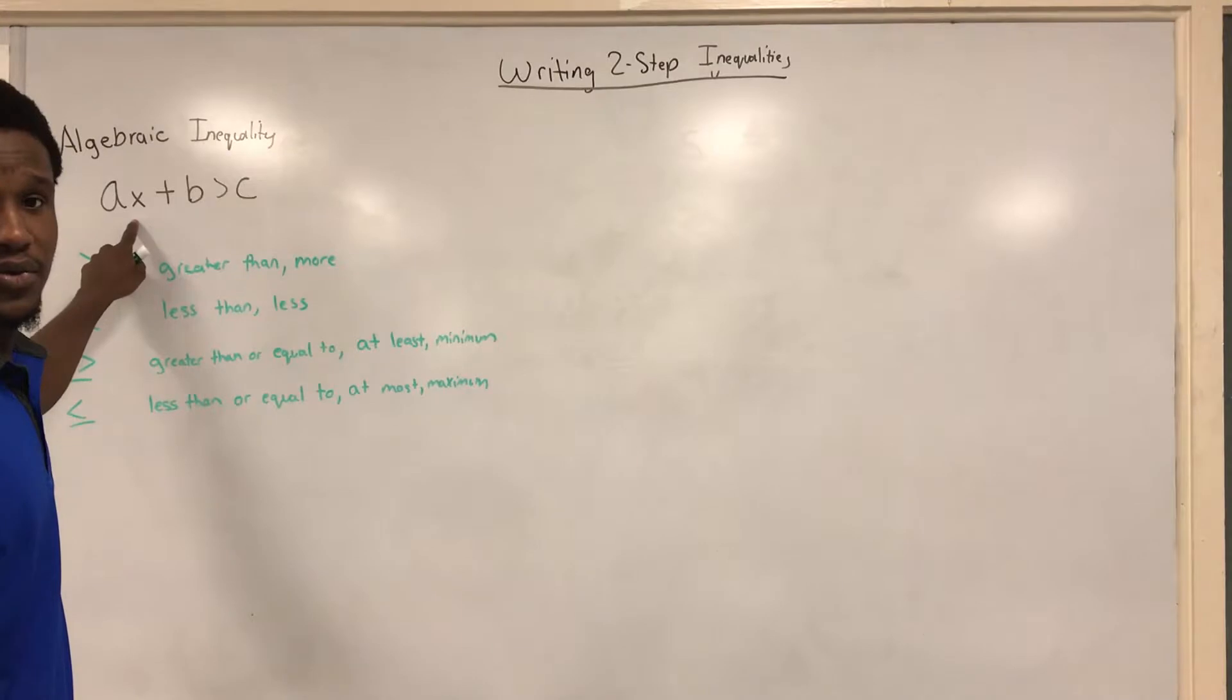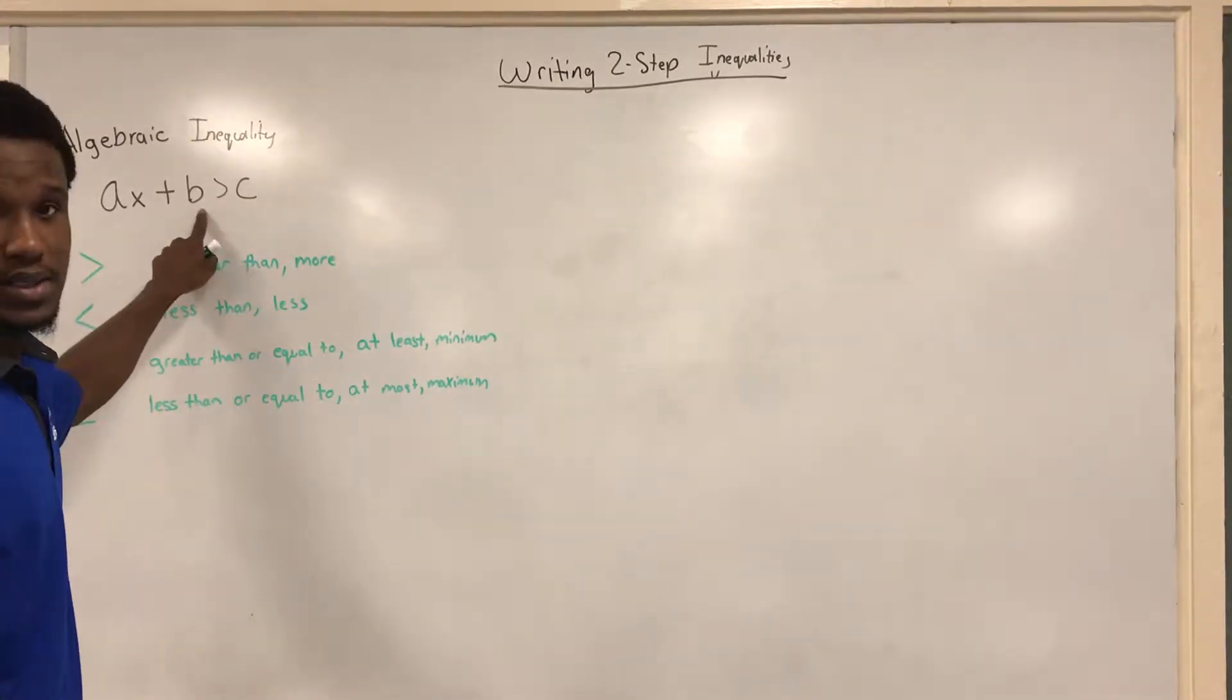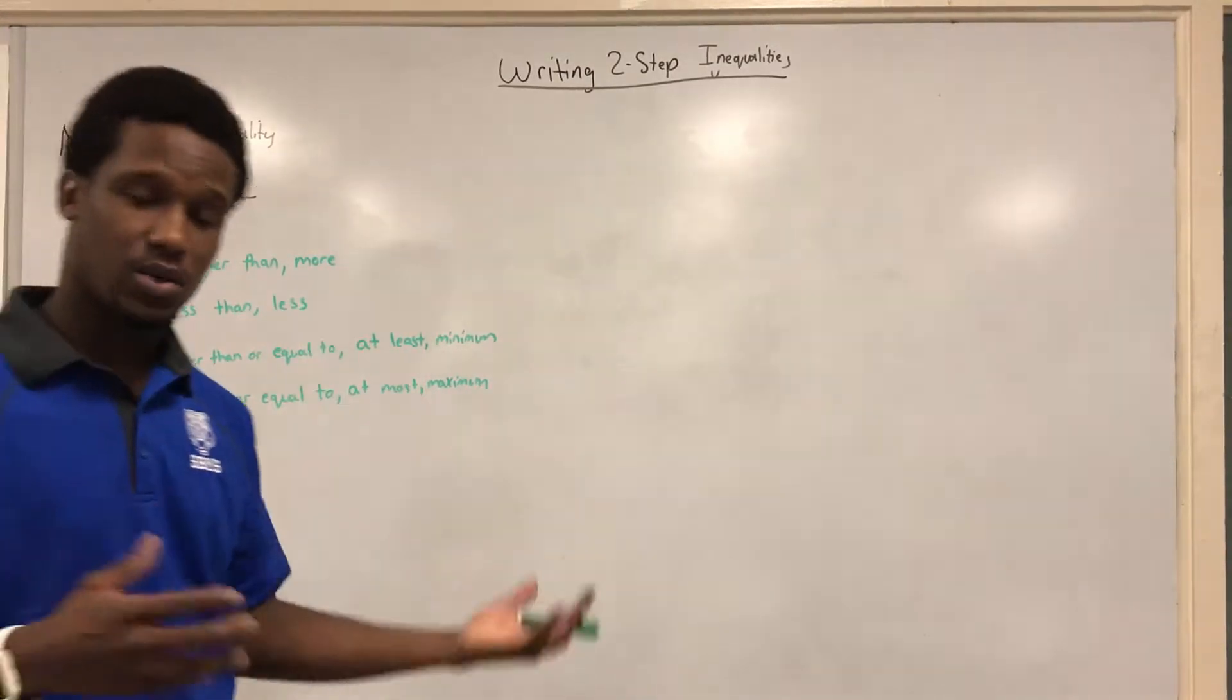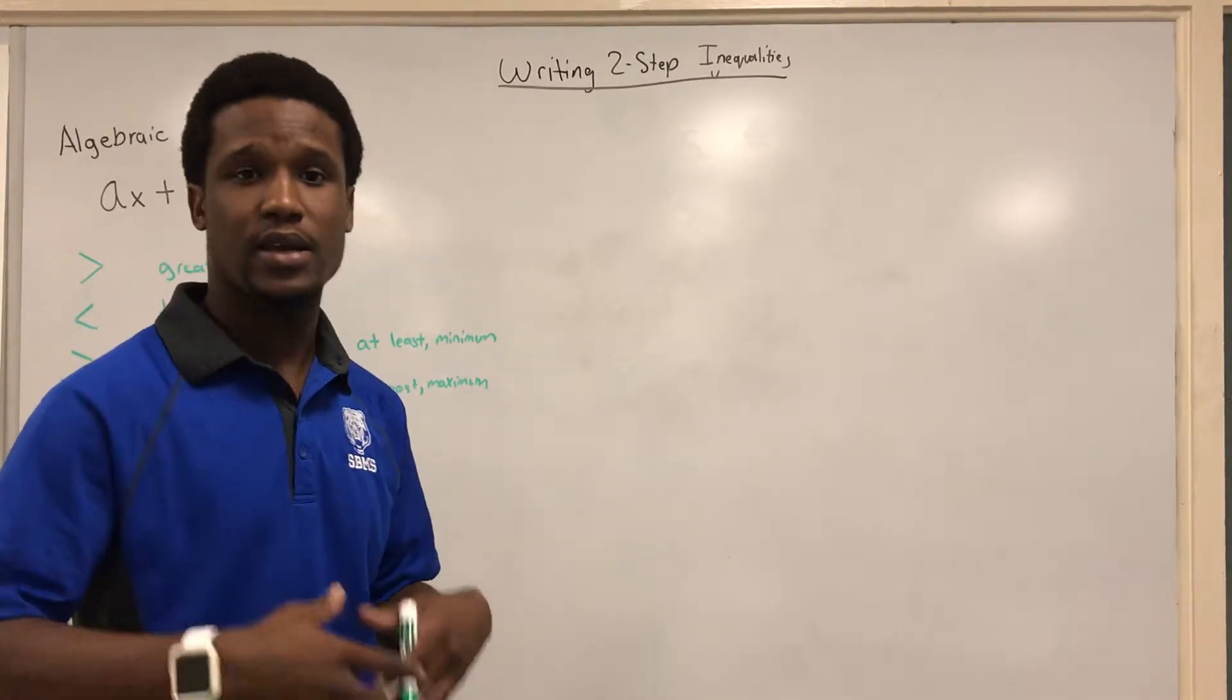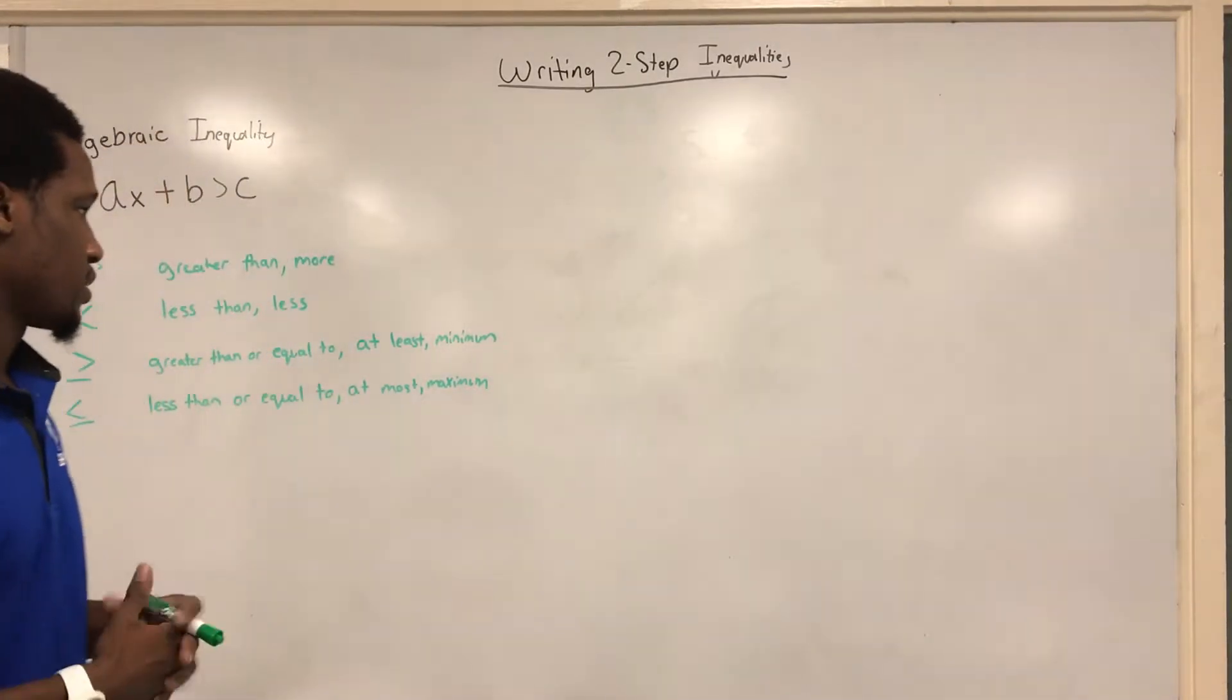So we still need to have our variable, we need to have our constant, and we need to have our target. Either what it's going to be equal to, less than, greater than, greater than or equal to, or less than or equal to.